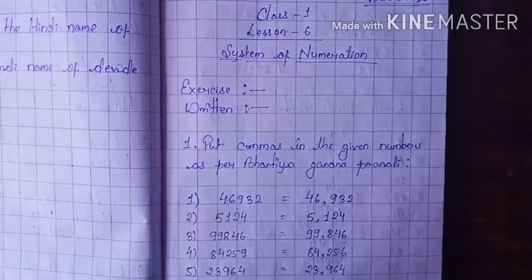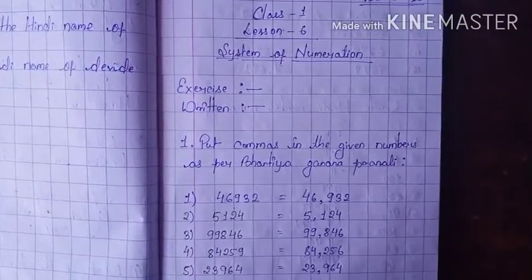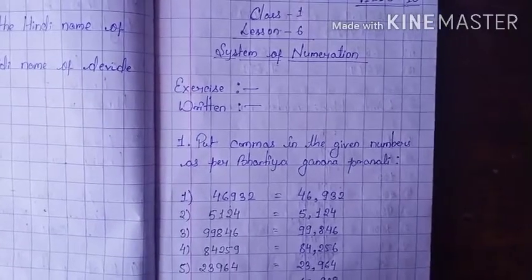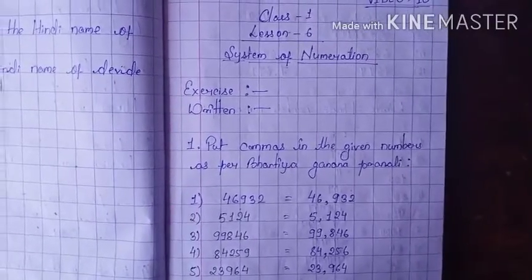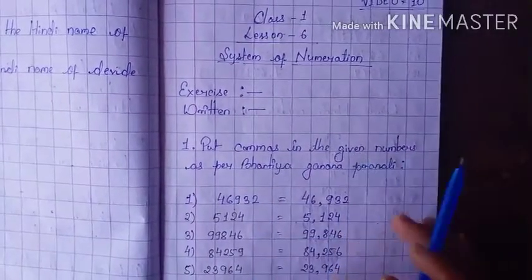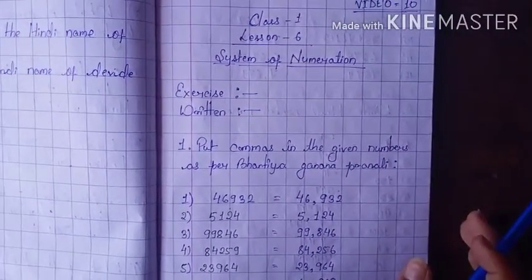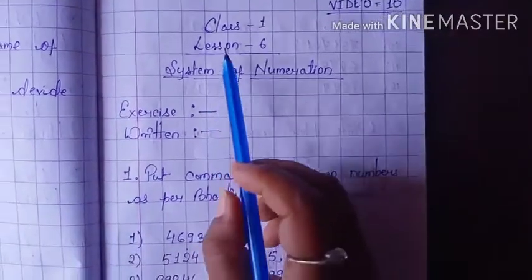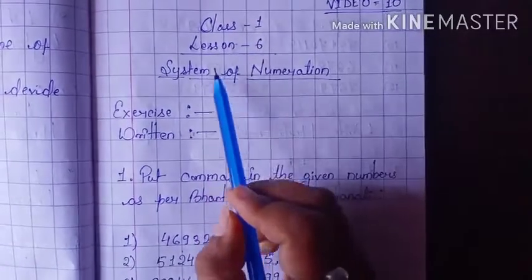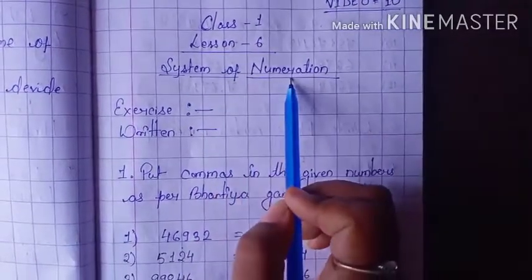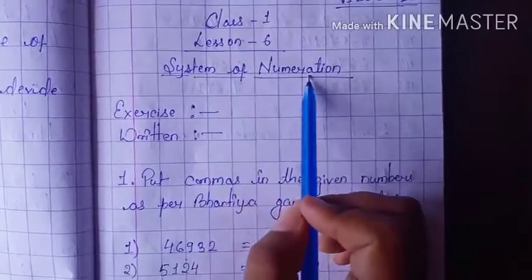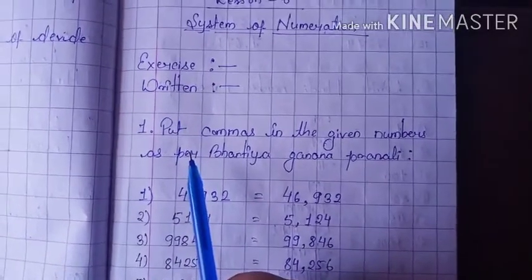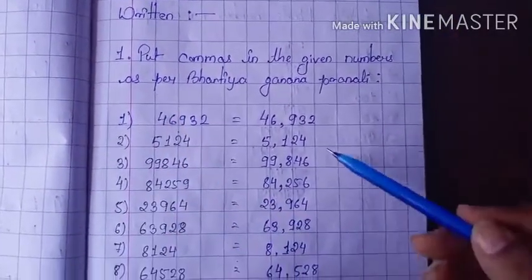This revision class, I will show you my notes copy which I have maintained for you all. Now bring your notes copy with pencil, eraser, and softener. Class 1, Lesson 6, System of Numeration. The topic is System of Numeration. With the exercise portion, I will give you lots of exercise questions which I have solved here.